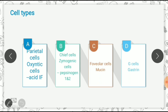The functions of these cells: parietal cells, also called oxyntic cells, secrete HCl acid and intrinsic factor, which is necessary for vitamin B12 absorption. Chief cells, also called zymogenic cells, are responsible for secretion of pepsinogen 1 and 2, a pro-enzyme converted into pepsin, a proteolytic enzyme. Foveolar cells secrete mucus. G cells are enterochromaffin-like cells that secrete gastrin, which in turn stimulates parietal cells to release acid. Histologically, the stomach has four layers: mucosa, submucosa, muscularis, and serosa.